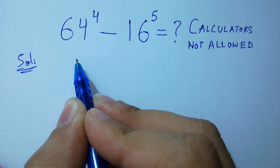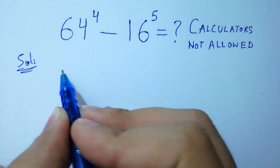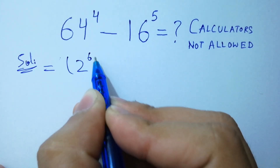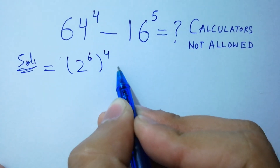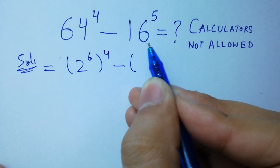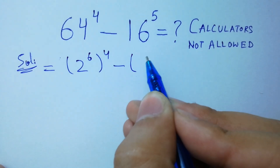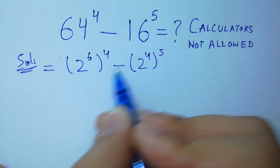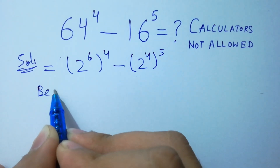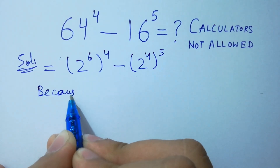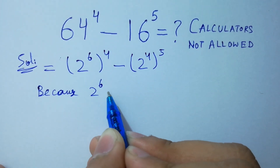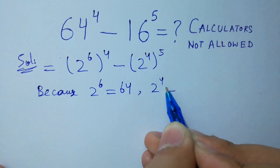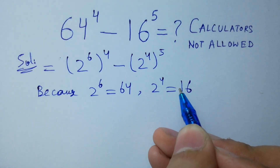64 to the power 4 is the same as 2 to the power 6, to the whole power 4, minus 16 to the power 5, which is the same as 2 to the power 4, to the whole power 5, because 2 to the power 6 equals 64 and 2 to the power 4 equals 16. I hope you understood.